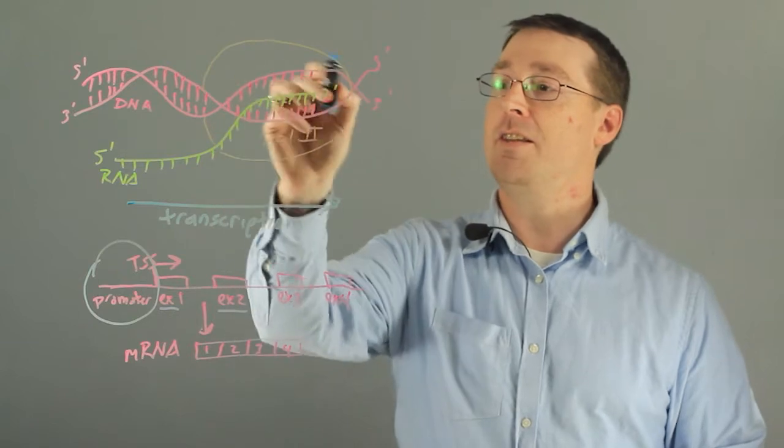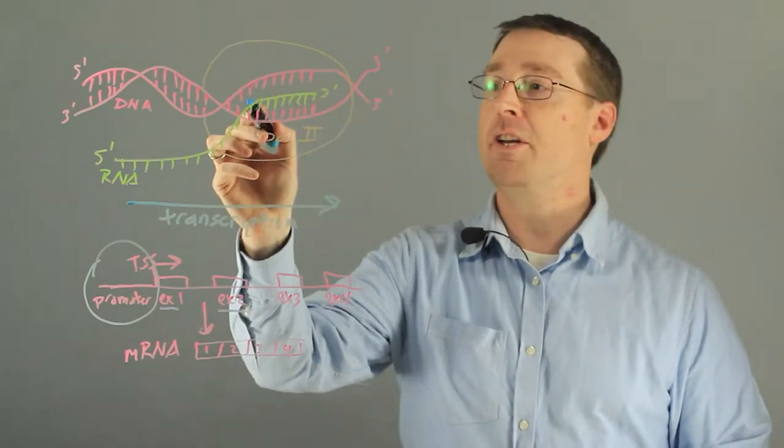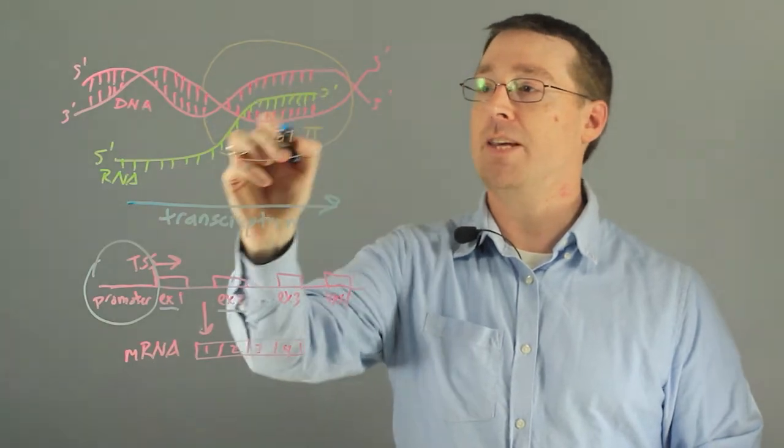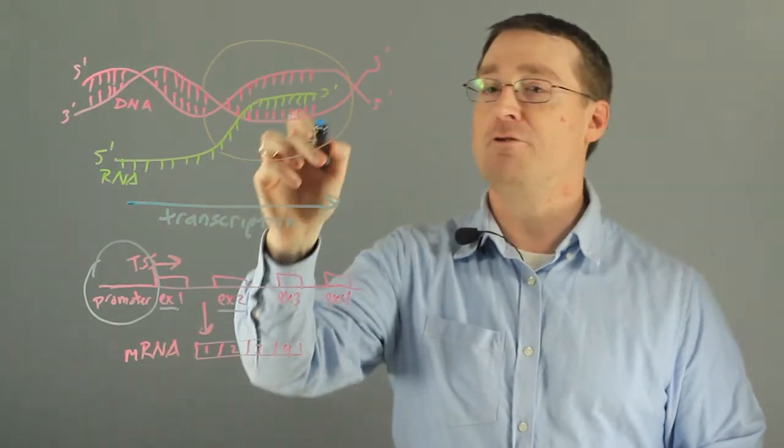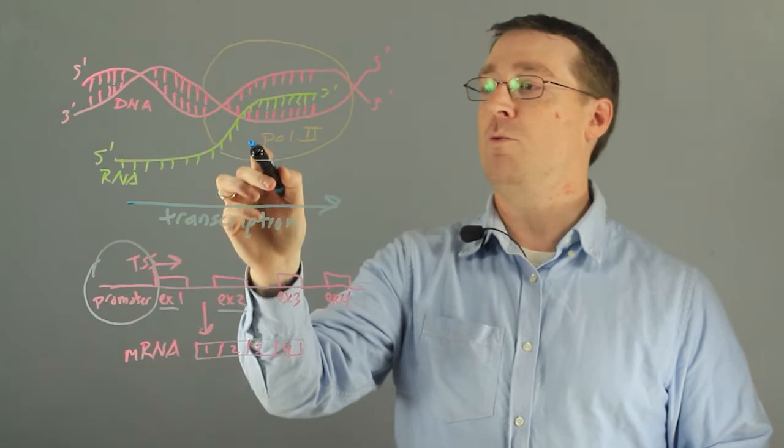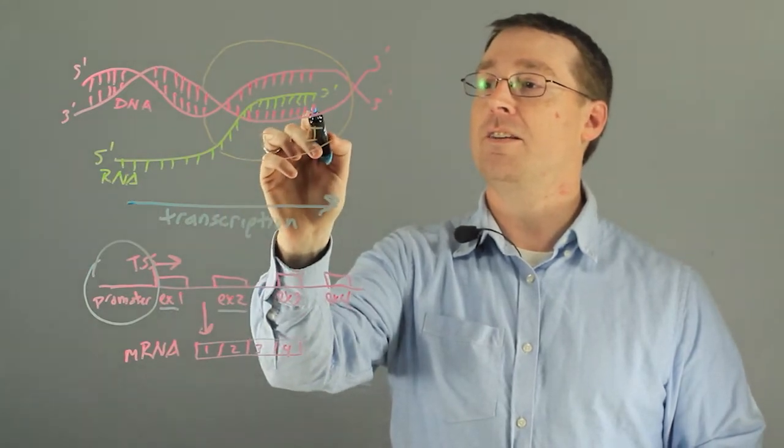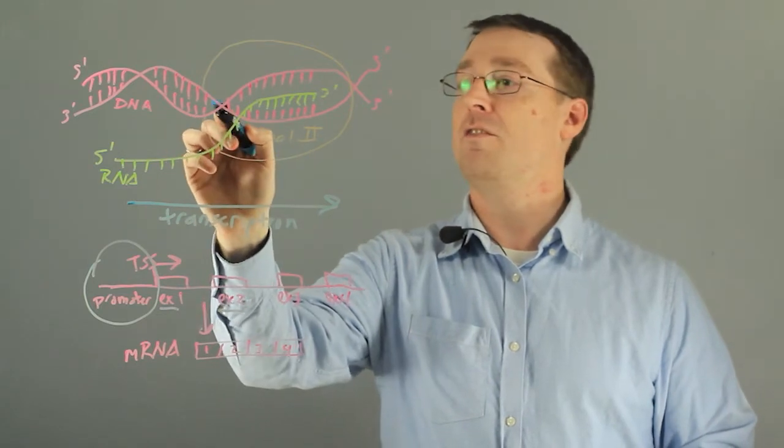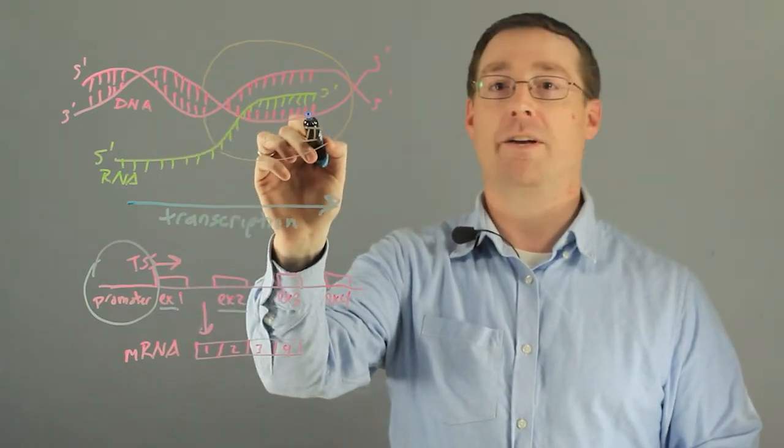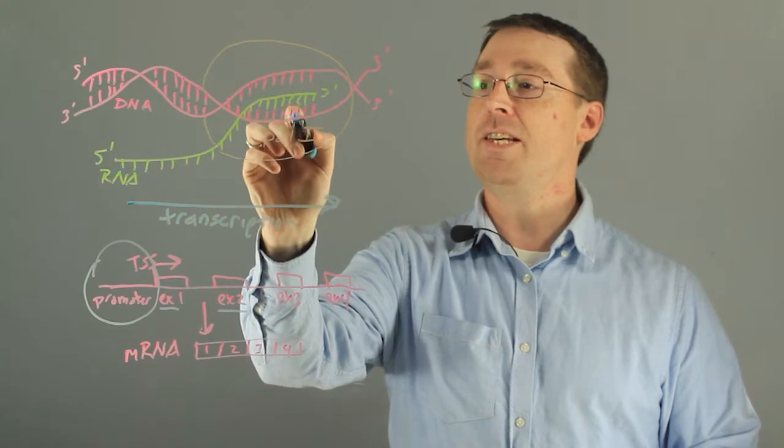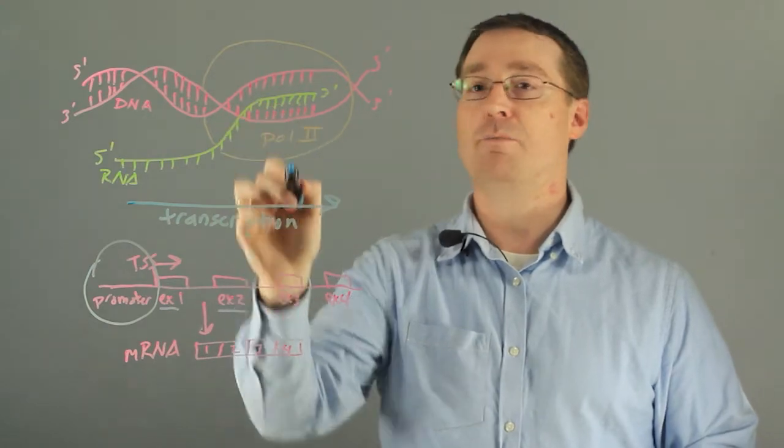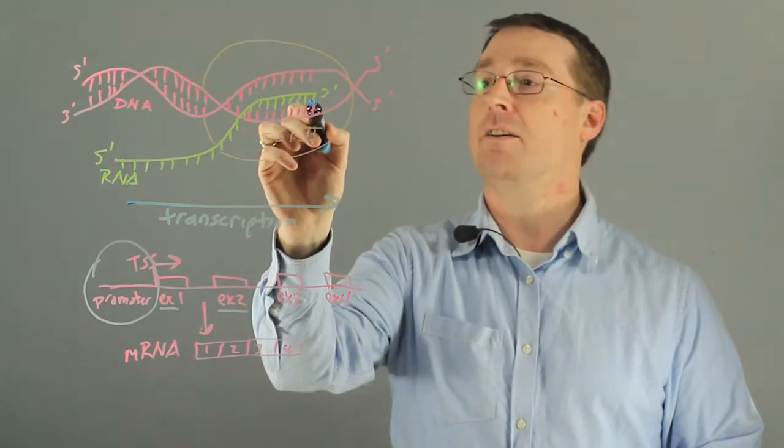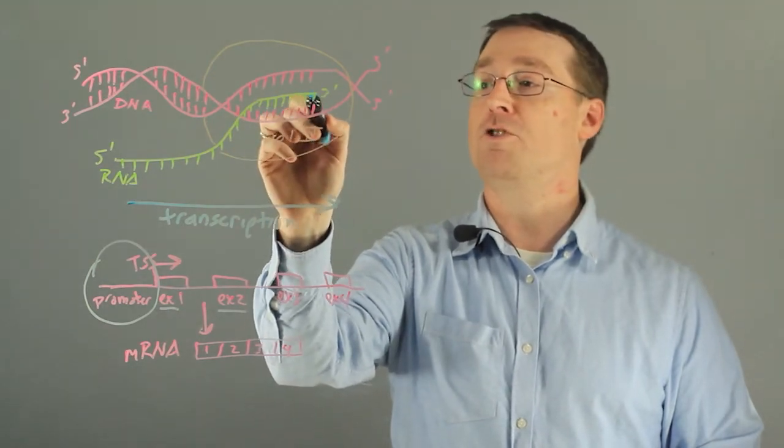So what happens is that the polymerase II machinery opens up a DNA helix, shown in pink, and creates a transcription bubble in which the machinery then reads the sequence of the bottom strand, or the 3' to 5' strand, and each of these teeth represents a specific unit of DNA code that is copied to the RNA, single-stranded RNA molecule, shown in green.